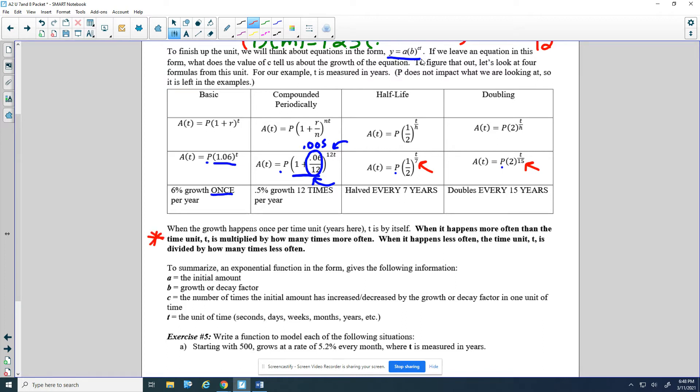Basically, when the growth happens once per time unit, years here, t is by itself. So once per year, it's just a t. When it happens more often than the time unit, so here we get a little bit of interest 12 times a year, t is multiplied by how many times more often. When it happens less often, like having to wait for 7 years or 15 years, the time unit t is divided by how many times less often.